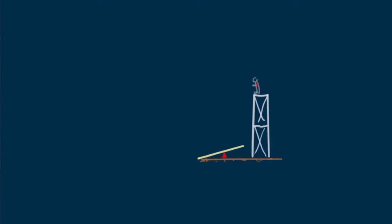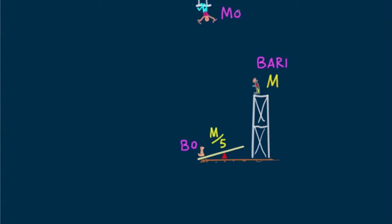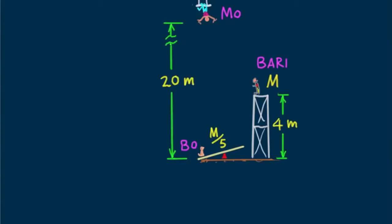Now I want to leave you with a question. Suppose Bowery drops a vertical distance of 4 meters to the seesaw. If Ari is replaced with a circus dog, Bo, who has one-fifth the mass of Bowery, and Bo's trainer Mo is positioned 20 meters high for a hoped-for catch, will Bo's propulsion be enough to reach Mo?